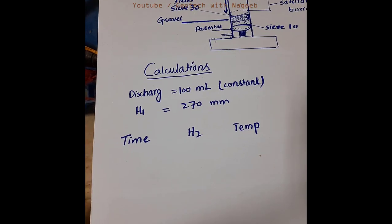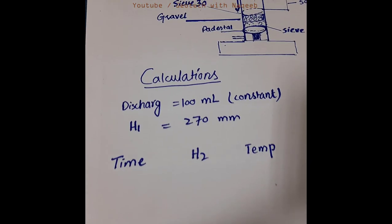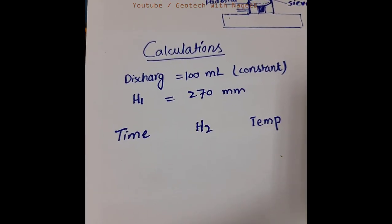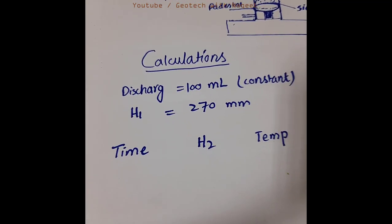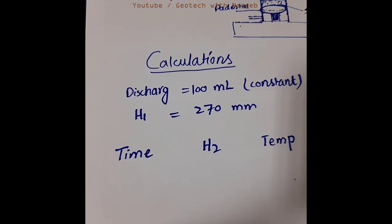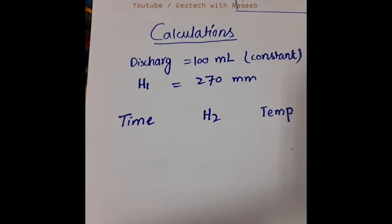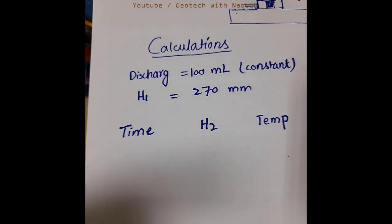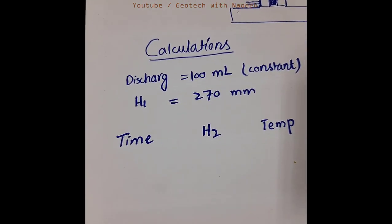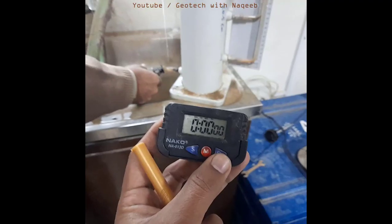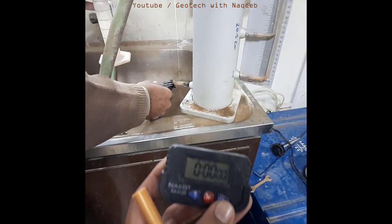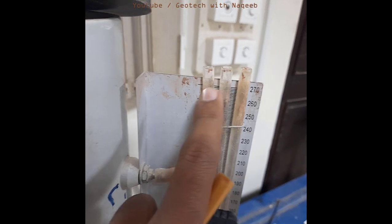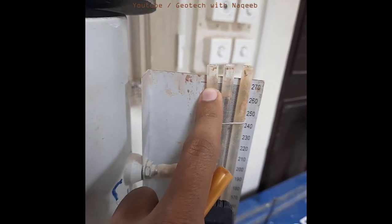To perform the test, we take observations. We have a fixed discharge of 100 ml as the constant value. The head h1 is 270 mm, which remains constant — that is why it is called the constant head test. We check the time required to collect 100 ml of discharge, note down the h2 value, and record the corresponding temperature. Here you can see h1 = 270 mm, which is constant.